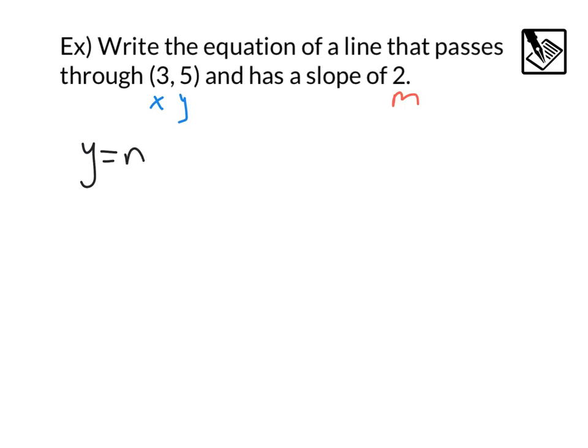Our point gives us a value for x and y and our slope gives us a value for m. So, we can take that equation, y equals mx plus b, and substitute in what we know. So, our y value is going to be 5 equals our m, which is 2, times x. That x coordinate is 3 plus b.